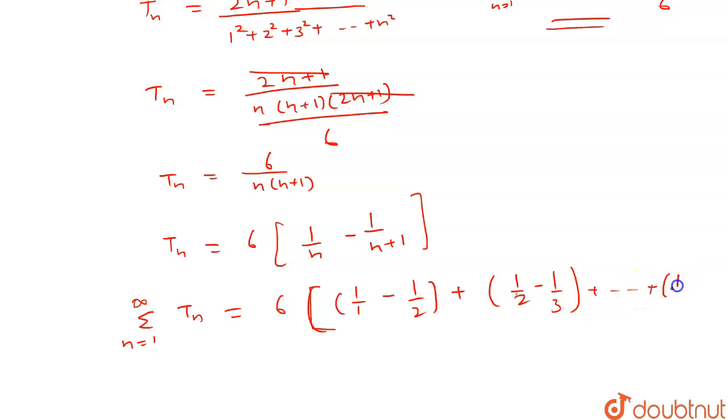6 into 1 upon 1 minus 1 upon 2 plus 1 upon 2 minus 1 upon 3 plus up to 1 upon n minus 1 upon n plus 1. Here we can see that this term will cancel out with this.